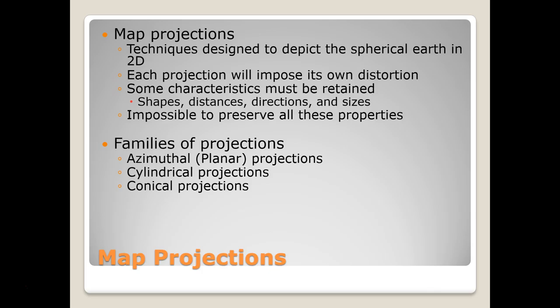One of the first concepts we have to discuss is the concept of map projections. As we know, the Earth is not a flat object — it is a spherical object. A map projection is a way of getting that 3D Earth into two dimensions. Essentially, it's a way of flattening out the Earth so that we can examine patterns and trends a little bit easier. When we take that round object and flatten it out, we're going to get some distortion because we can't keep all the characteristics retained.